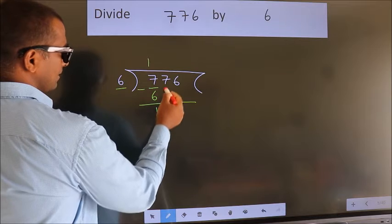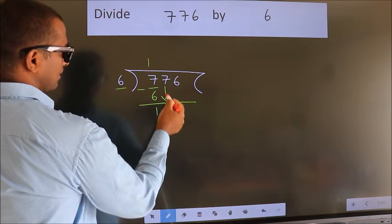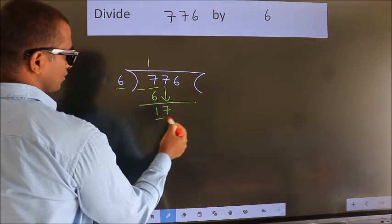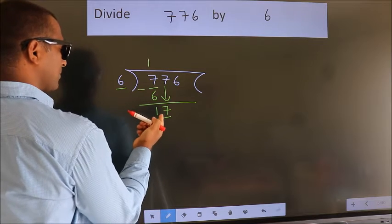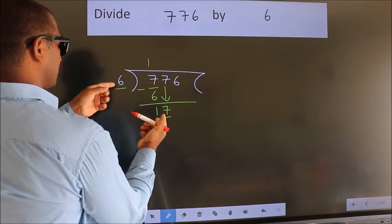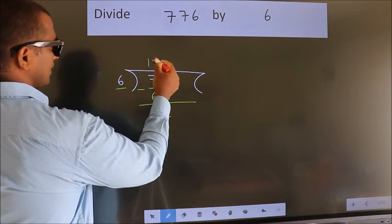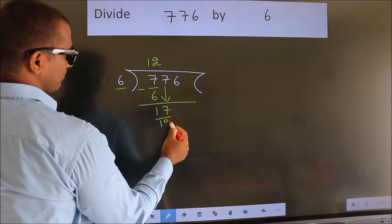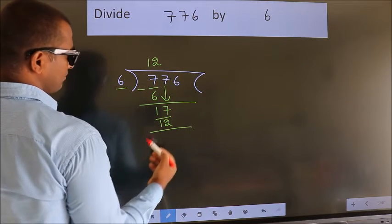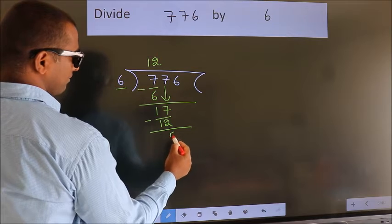After this, bring down the beside number. So 7 down, so 17. A number close to 17 in 6 table is 6 twos, 12. Now we subtract. We get 5.